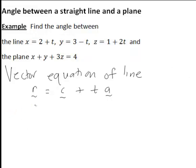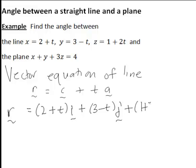For the vector equation of the line, that has the form r equal to c plus ta, which is clearly not the form this is in at the moment. And r is actually xi plus yj plus zk, so therefore in this case that will be 2 plus t times i, plus 3 minus t times j, plus 1 plus 2t times k.